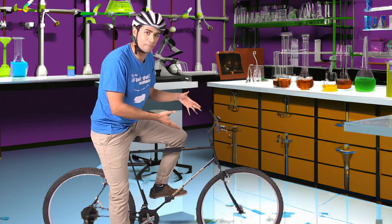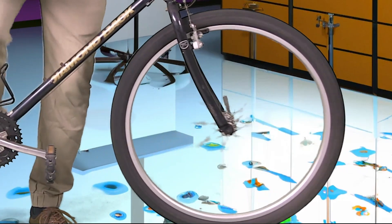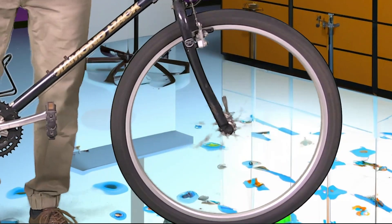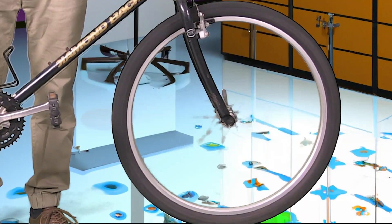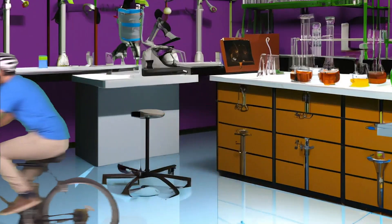A bike does not move forward if you spin its tires in the air. It only moves forward on the ground because of the friction between the ground and the tires.